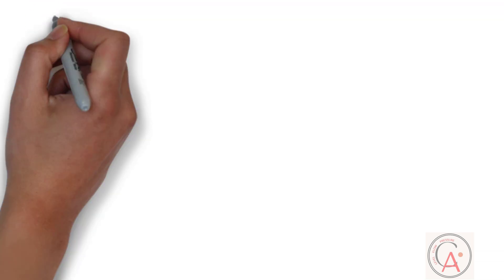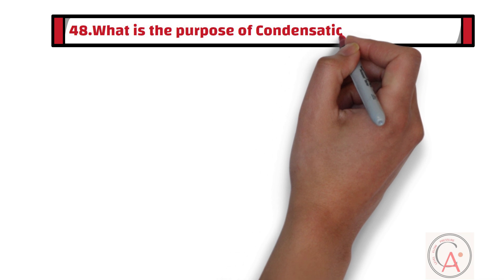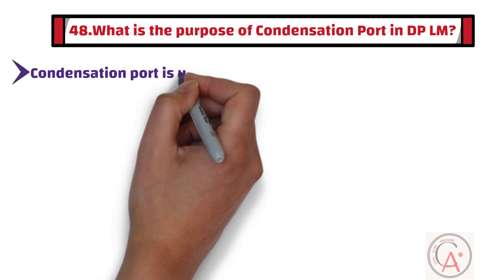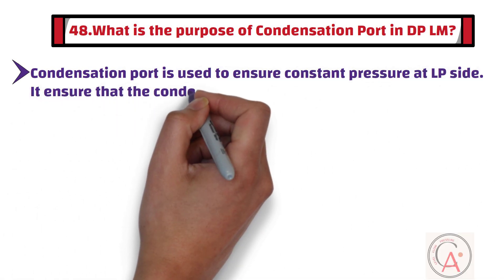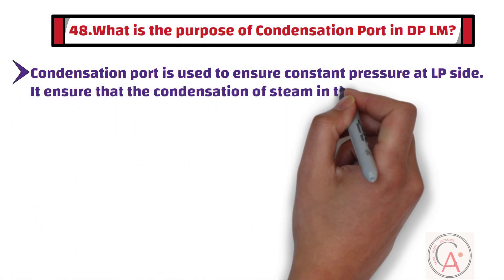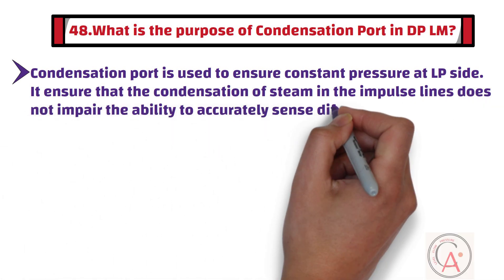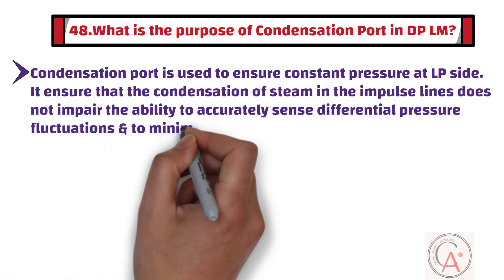Question 48: What is the purpose of a condensation port in DP level measurement? A condensation port is used to ensure constant pressure at the low pressure side. It ensures that the condensation of steam in the impulse lines does not impair the ability to accurately sense differential pressure fluctuations and minimize gauge line error.